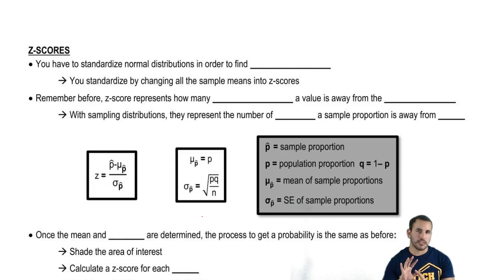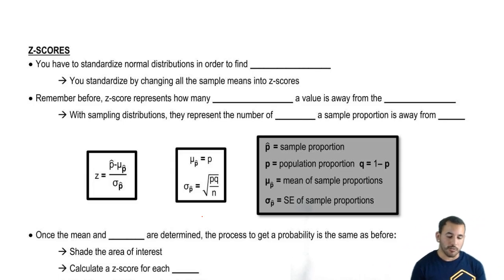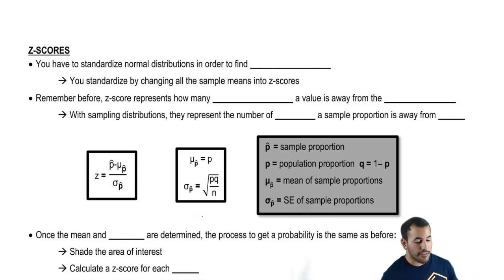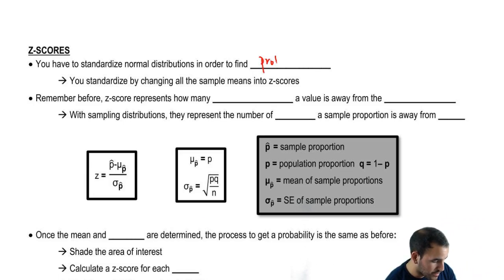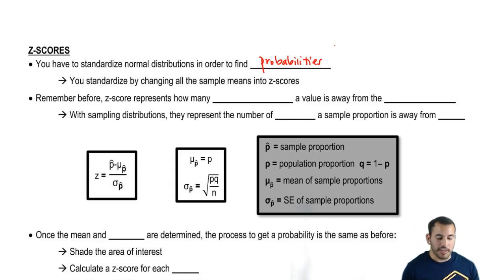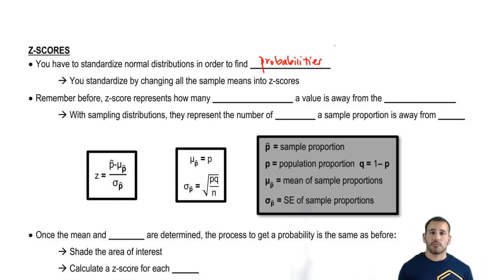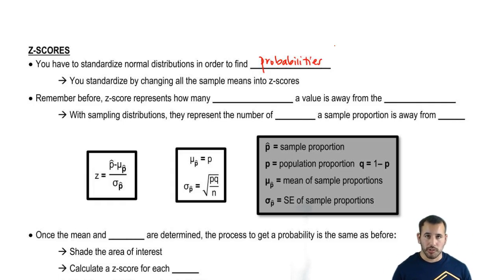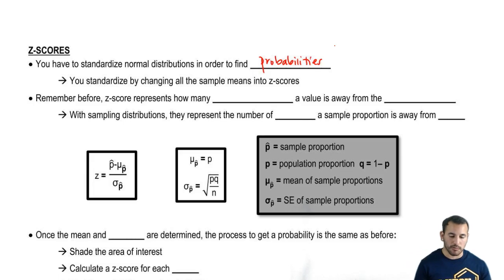To set the tone: Z-scores. You have to standardize normal distributions in order to find probability. You standardize by changing all the sample means into Z-scores. Now we're going to change it to proportions — we're going to do sample proportions — and we'll see how that works in a second.